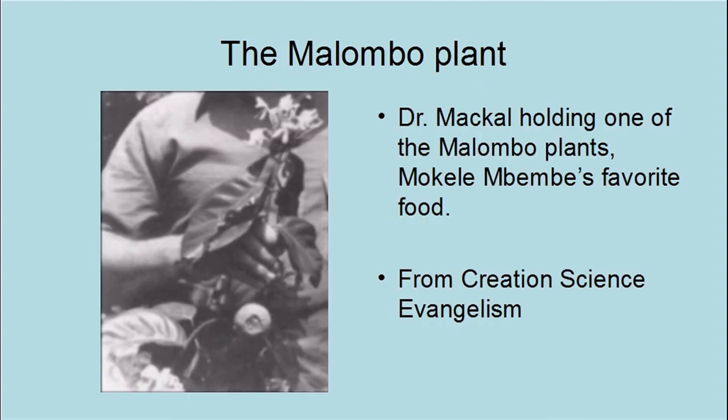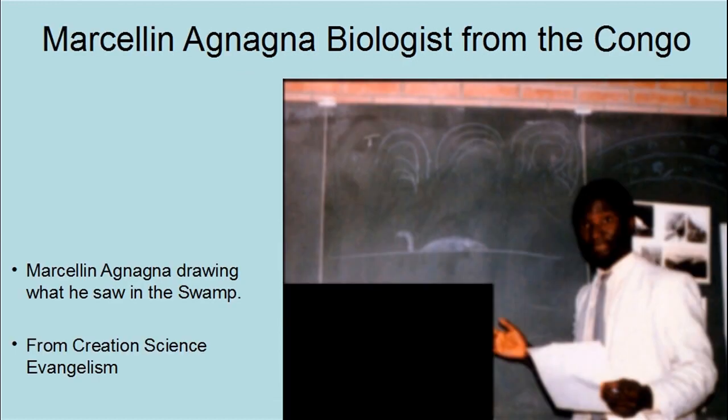Their favorite food is the Malumbo plant. Dr. Mackal is shown holding one of the Malumbo plants — it has a fruit kind of like an apple, only harder. They found footprints of the creature on the shore with claw marks on them. Elephants and hippos are about the same size, but they do not have claws on their feet. Biologist Marcellin Agnagna from the Congo went on one of the expeditions and said, 'I live in the Congo, and I didn't know that 500 miles upriver from my house, the swamp had stories of dinosaurs.' He claims to have seen one and drew a sketch for Time Life's Mysterious Creatures. Unfortunately, the humidity in the swamp makes getting good photographs extremely difficult.